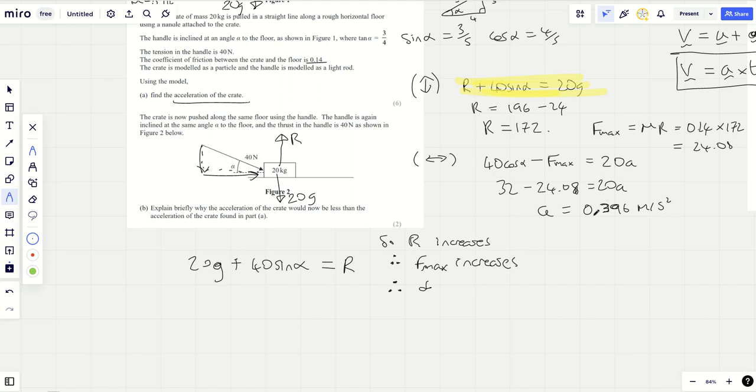that will decrease. The acceleration, how do we work it out? We did 40 cos alpha minus f max over 20a. This number is going to be smaller and therefore the acceleration is going to be smaller. Or if you prefer, there's more resisting force and so this resistance causes the acceleration to decrease.